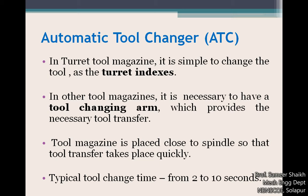In drum type and chain type of tool magazines, we do need a tool changing arm to provide the necessary tool transfer. The tool magazine is placed very close to the spindle — drum type or chain type — so that tool transfer takes place very quickly. The tool changing time is generally from 2 seconds to 10 seconds only, so it is that fast. Within 2 to 10 seconds you get the change of tool from the spindle to the tool magazine.